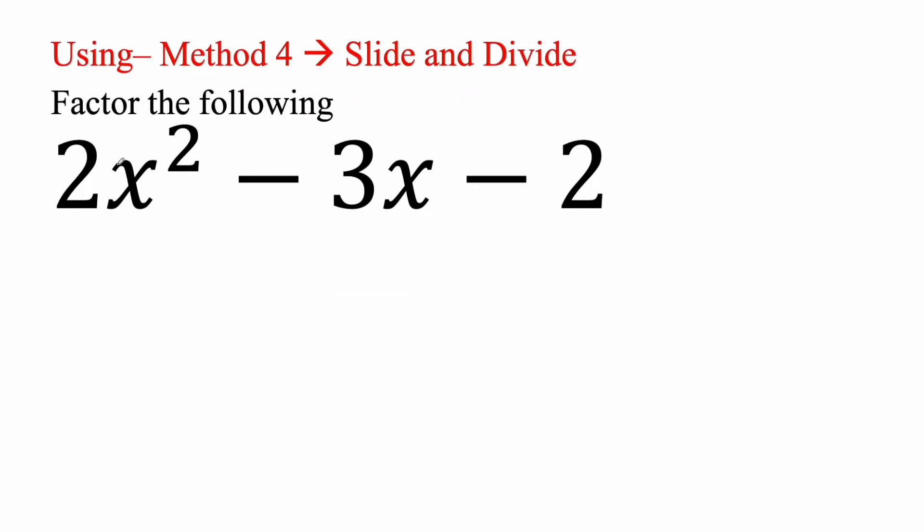So with this method I want to get this piece to be an x squared. So what I'm going to do is divide by 2. And so this changes to an x squared.